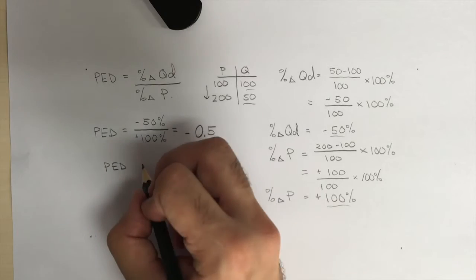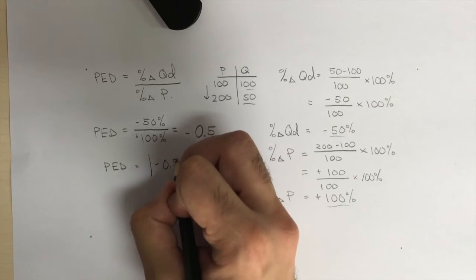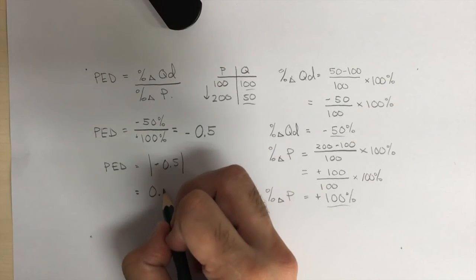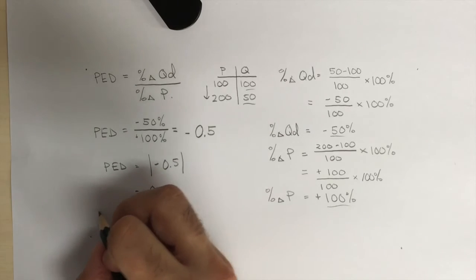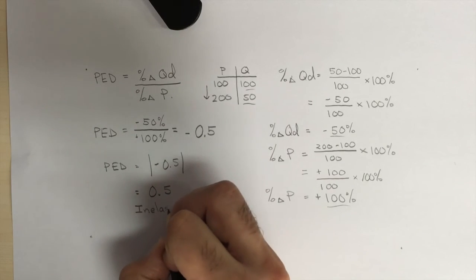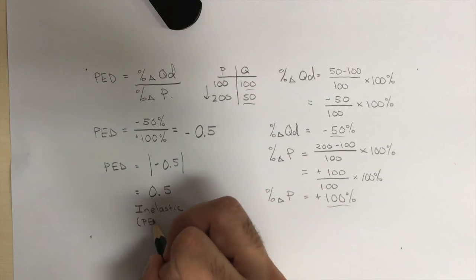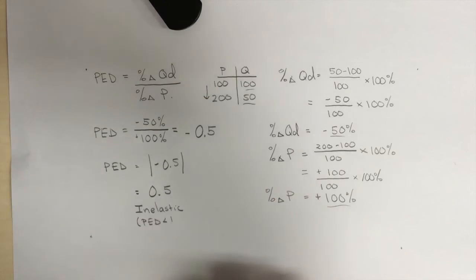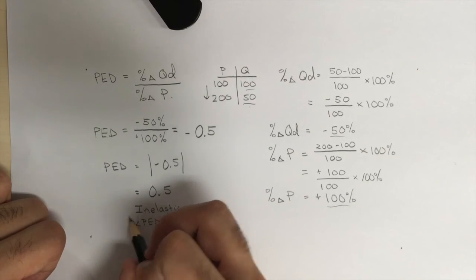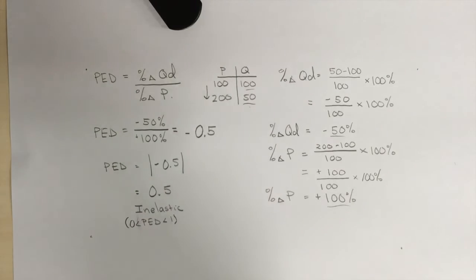Now that 0.5 is negative, but we're going to take the absolute value because we're going to discard the sign. And the reason for that is we assume that there is always going to be an inverse relationship between price and quantity, so the minus sign is not very important when we look at price elasticity of demand. This final value of 0.5 indicates to us that demand for this product is inelastic when that price change occurs.